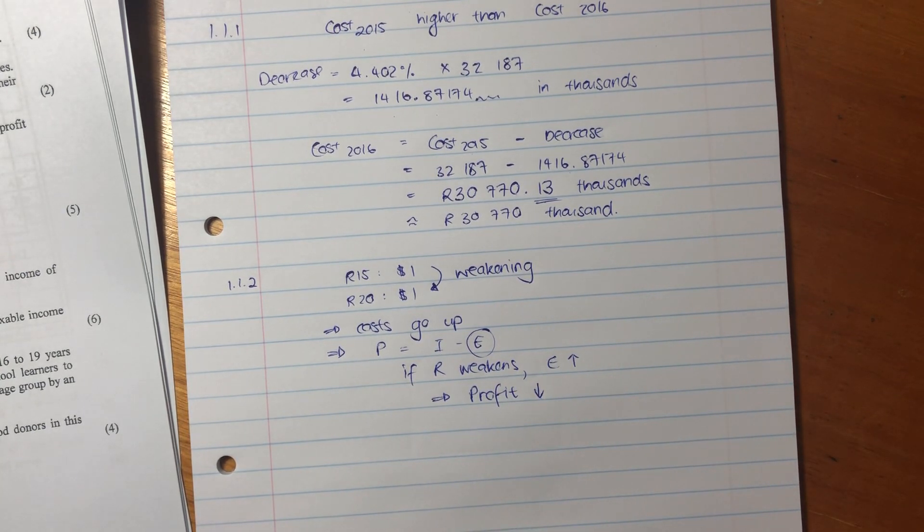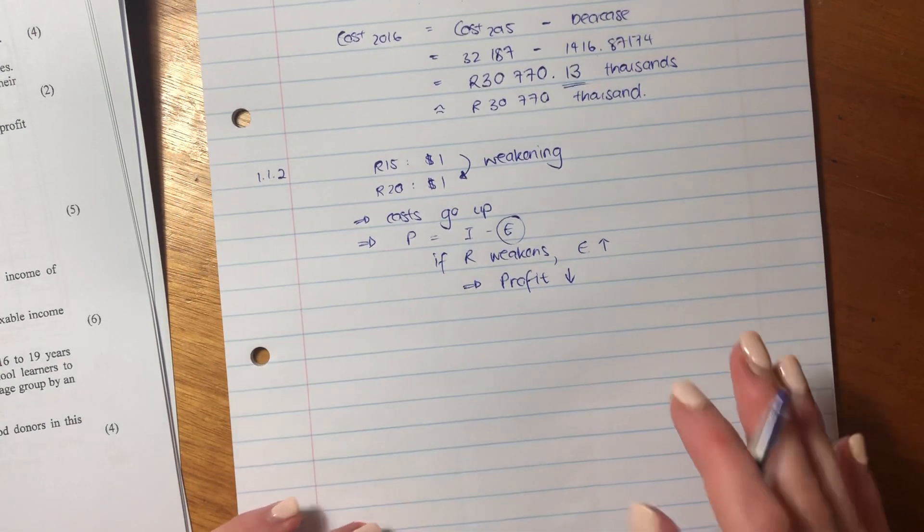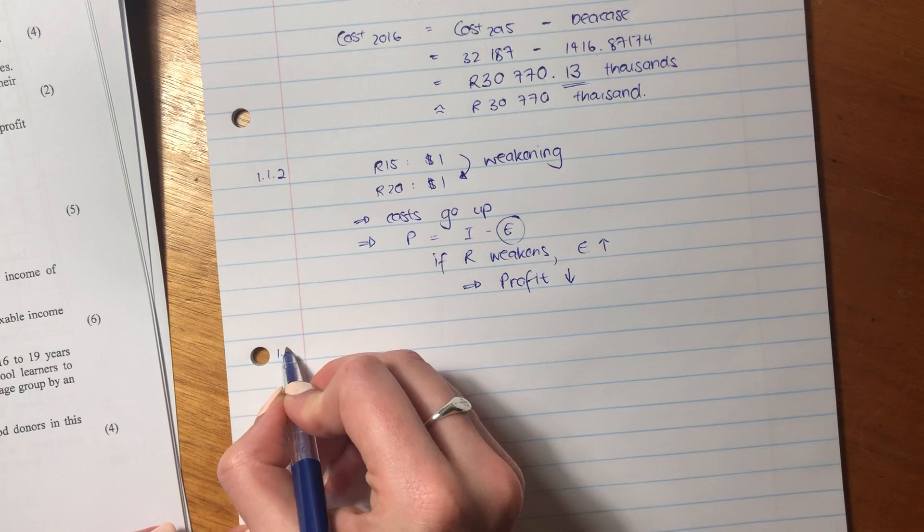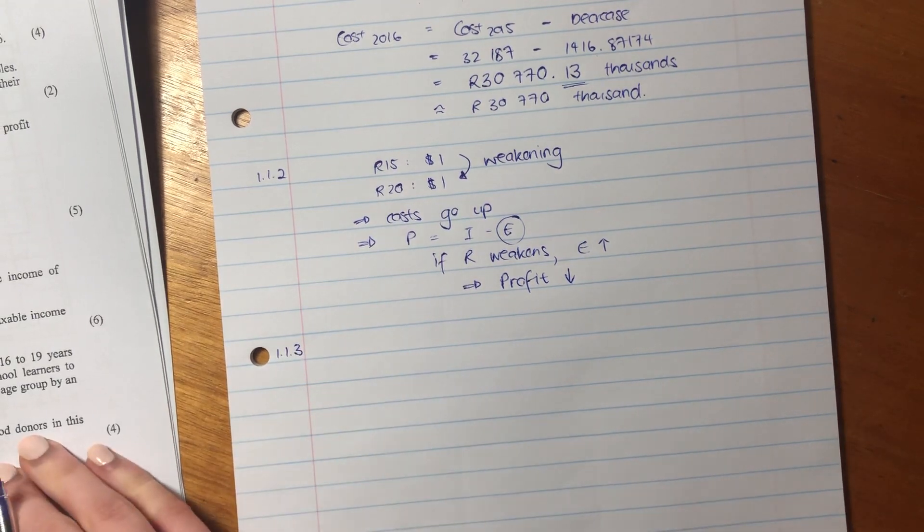And we know that profit equals income minus expenses. So if rand weakens, then our expenses go up. So this guy here goes up. But our income doesn't necessarily go up. So that means that our profit decreases. That is important because if we have lots of costs that are subject to currency changes, it means that our profit can be really volatile, can be all over the place and unpredictable, which is concerning for a business.